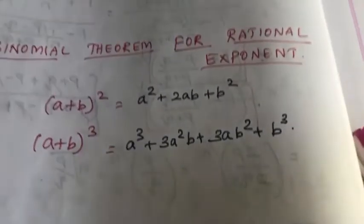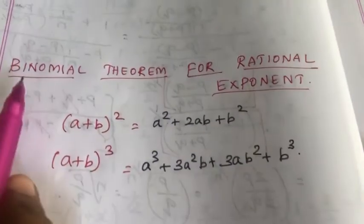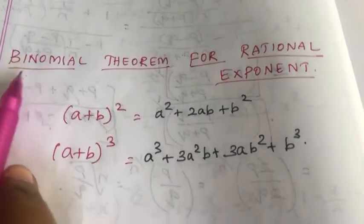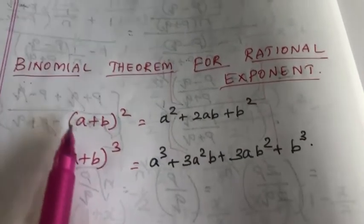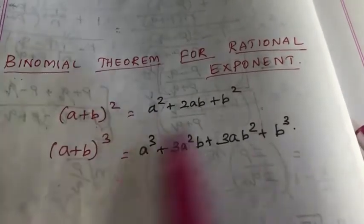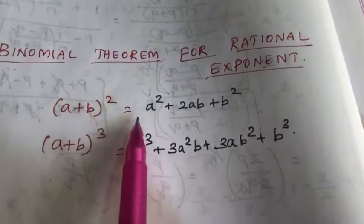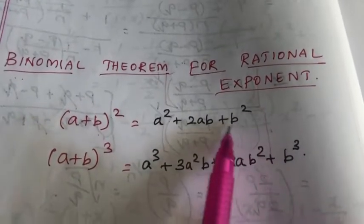Binomial theorem — by means what? By means 2. So, for the sum of 2 values, we can find the expansion, the general expression.